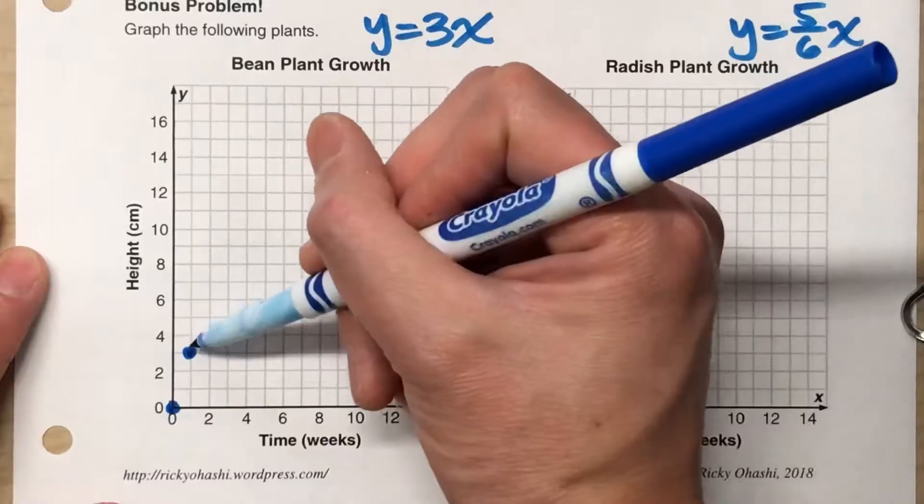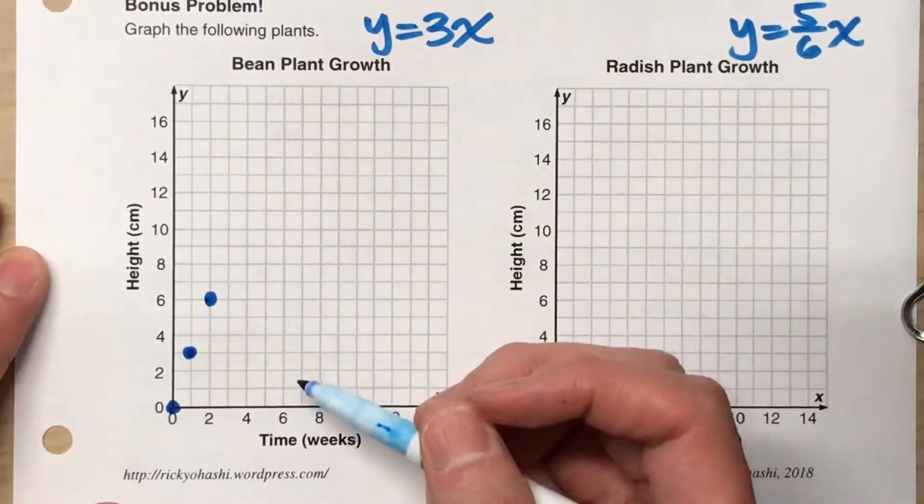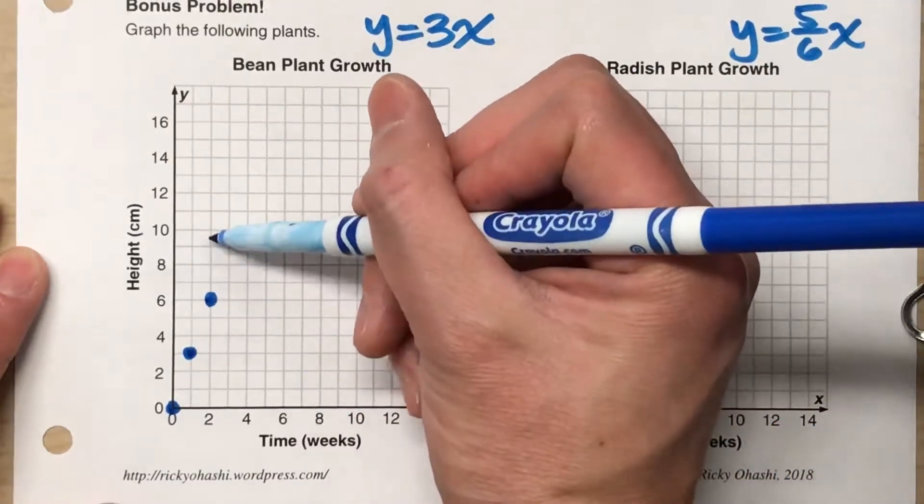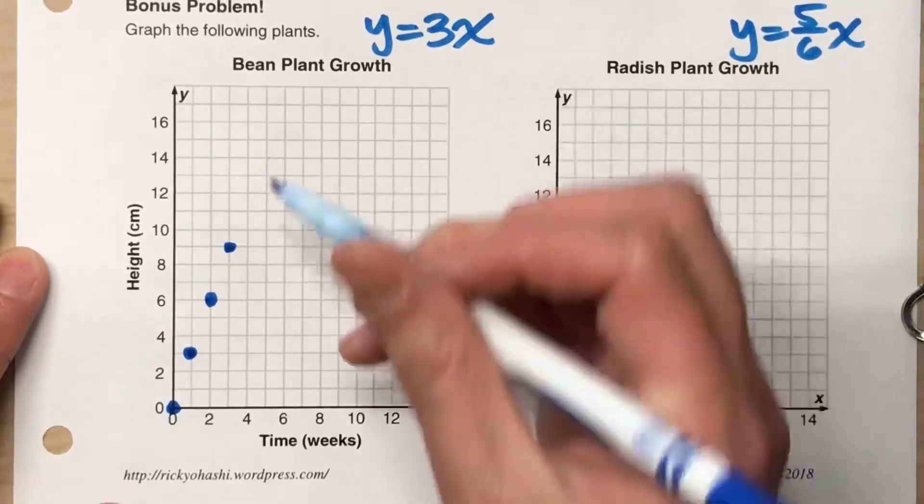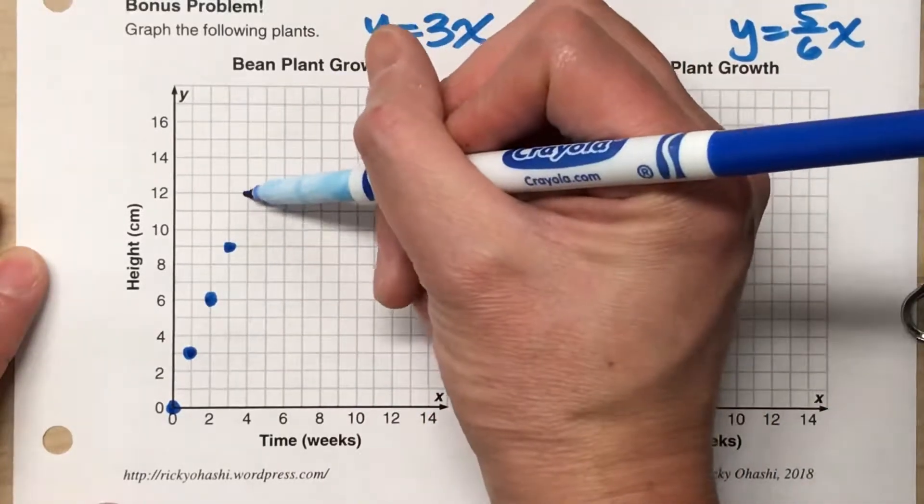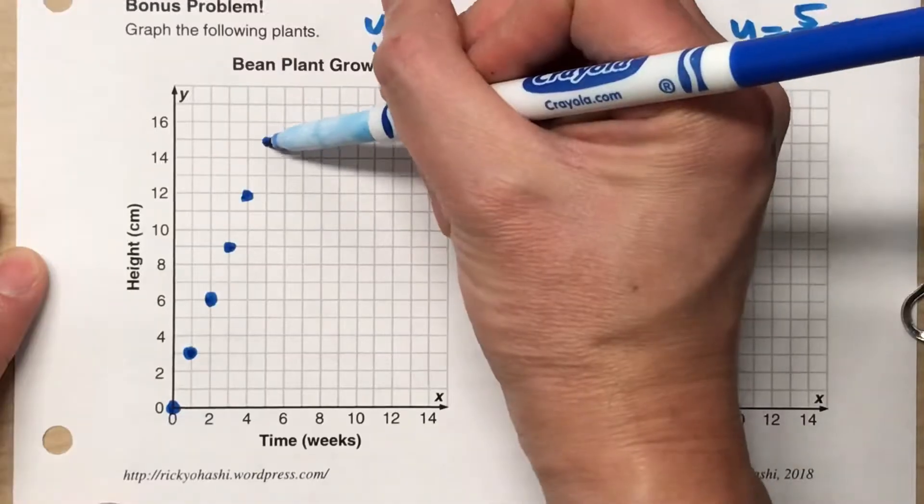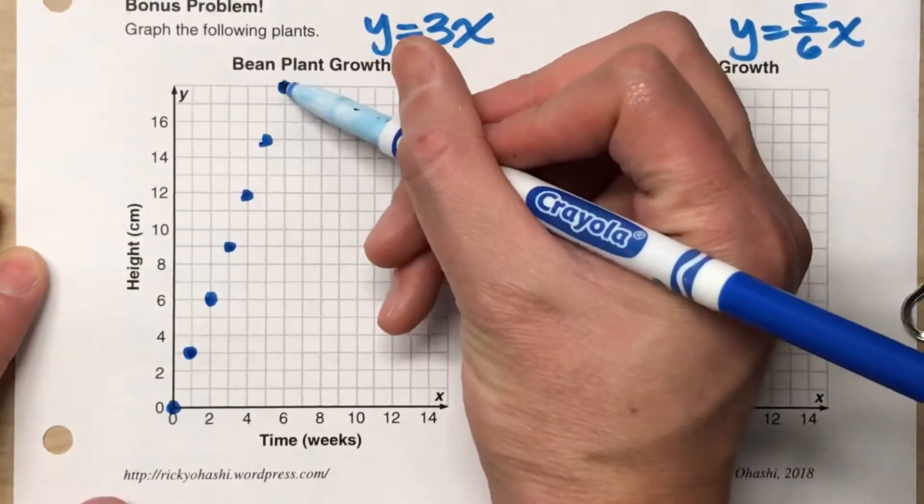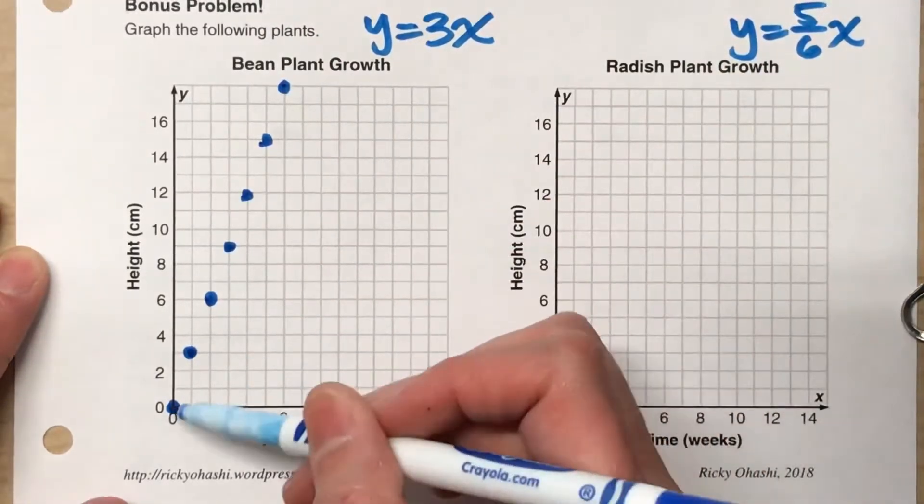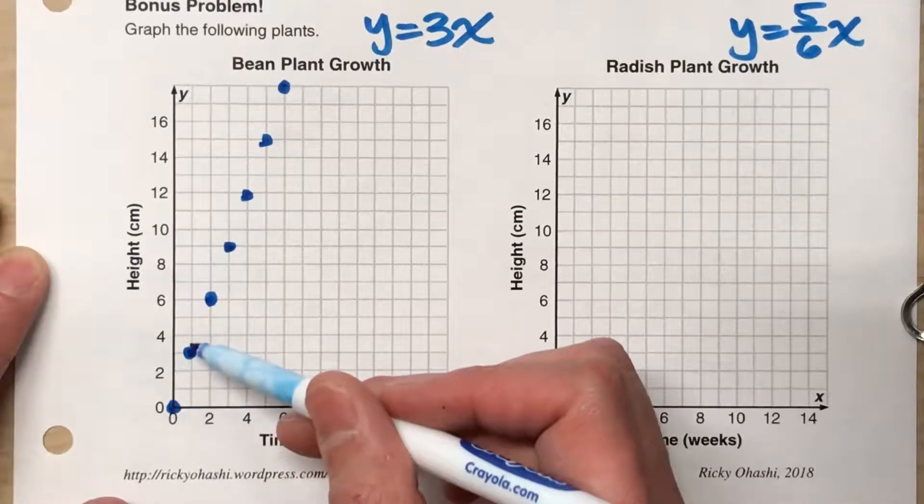And then after another week, it'll grow an additional 3 centimeters. So the following week, it's going to grow another 3 centimeters. And you can kind of see the pattern here. Every week, it grows 3 centimeters. So each time I go over, I'm going up.